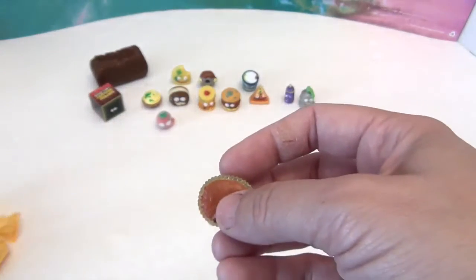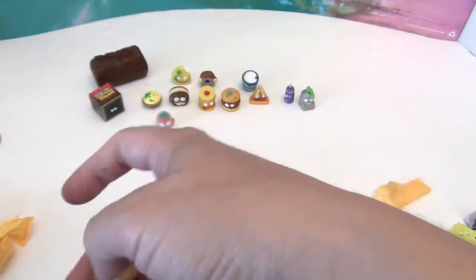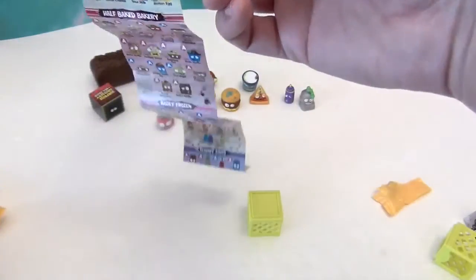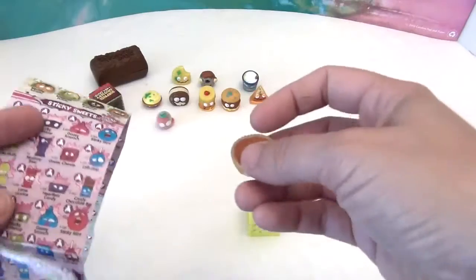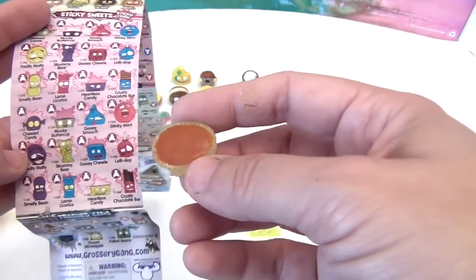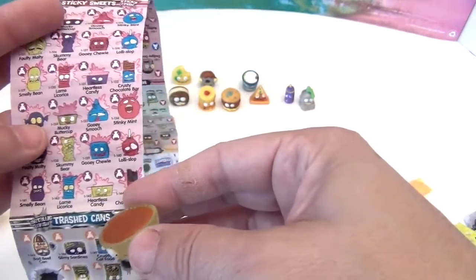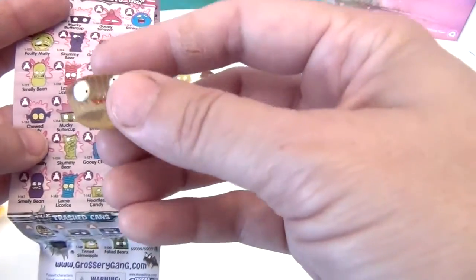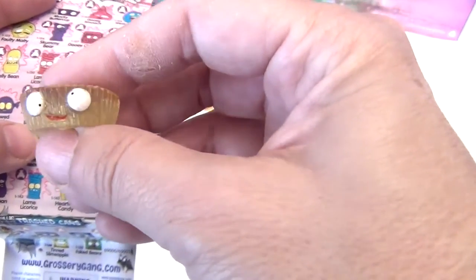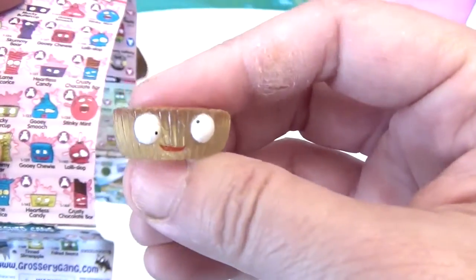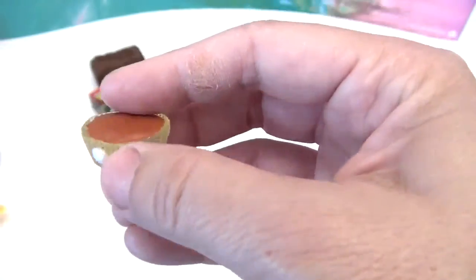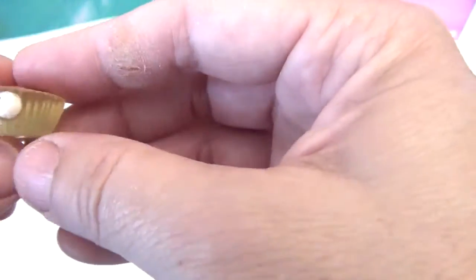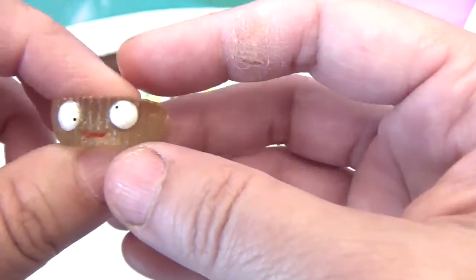Let's get my checklist out, we've got the stickies on here. Here's the stickies. Is this Mucky Butter Cup? Yes, I think this is Mucky Butter Cup. It looks like a Reese's cup, doesn't look too not tasty except for the eyes on it. And it is sticky, it's pretty sticky, not extremely sticky.